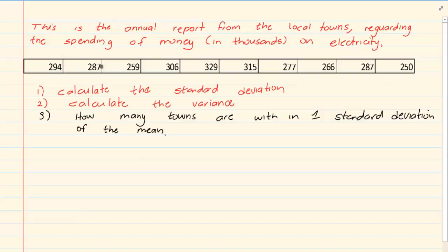So 294, 287, 259, and then they gave us the information for 1, 2, 3, 4, 5, 6, 7, 8, 9, 10 towns.